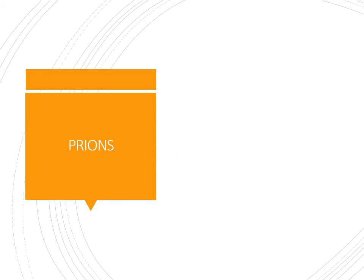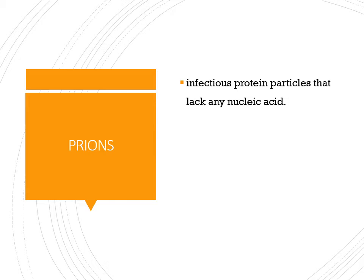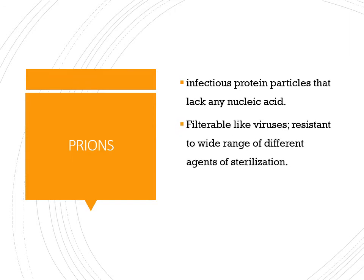Now, what are prions? Prions are basically proteins — infectious protein particles. Very importantly, they do not have any nucleic acid. They are filterable like viruses and represent the most resistant form to sterilization — topping the list above viruses, bacteria, and fungi.